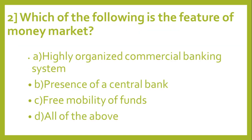Question number 2: Which of the following is the feature of money market? Options: A: Highly organized commercial banking system. B: Presence of a central bank. C: Free mobility of funds. D: All of the above. And the correct answer is D, All of the above.